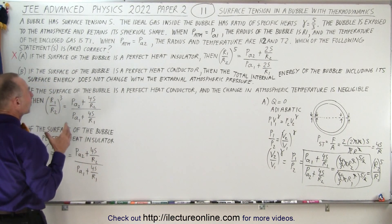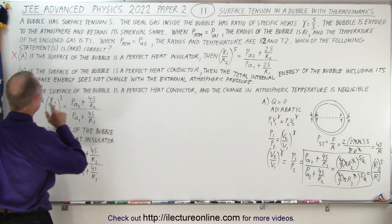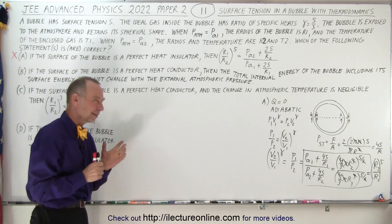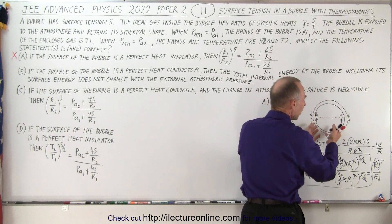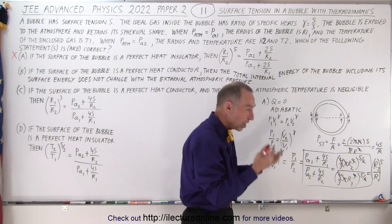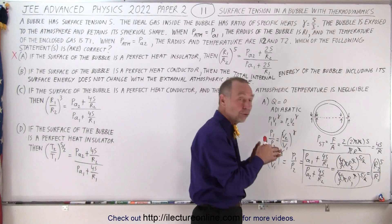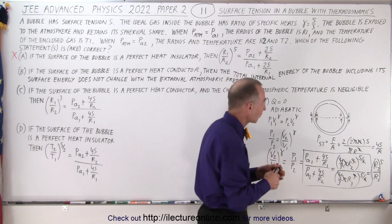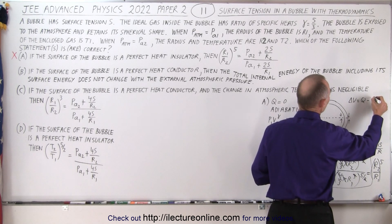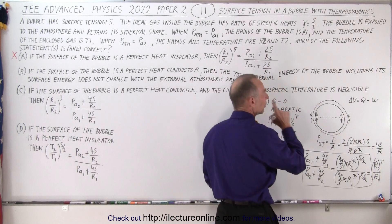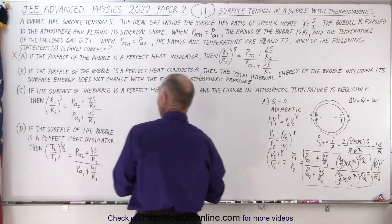For part B, the surface is a perfect heat conductor so heat can go in and out. Statement B claims the total internal energy including surface energy does not change with external atmospheric pressure. That's strange because when atmospheric pressure changes, the gas volume changes, work is done, and by the first law of thermodynamics — delta U equals heat added minus work done by the gas — if work is done and heat is exchanged, the internal energy must change. Therefore, statement B is not correct.